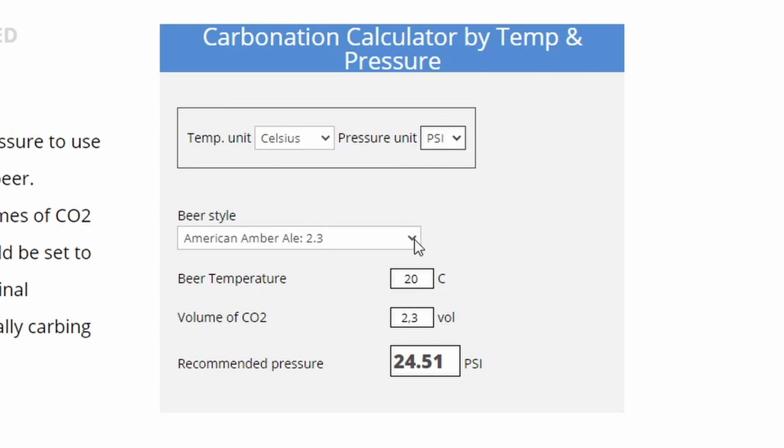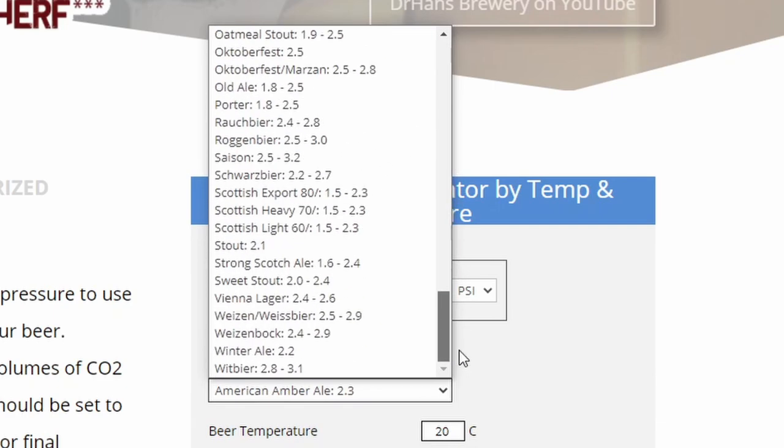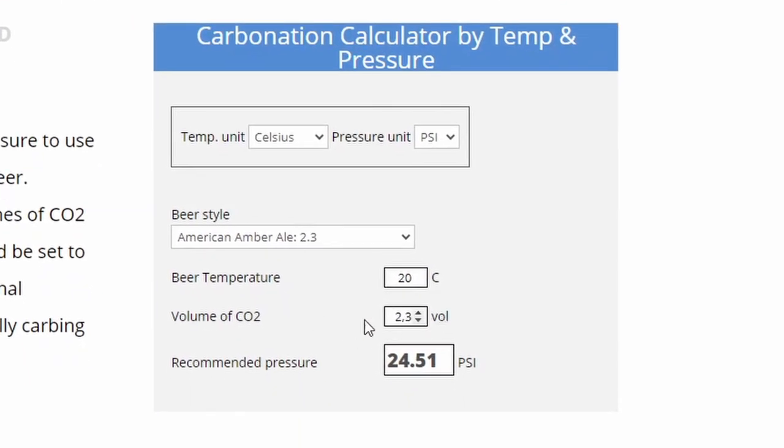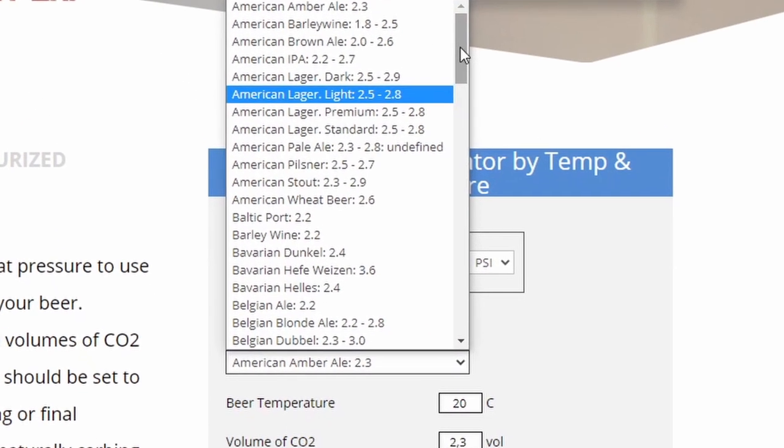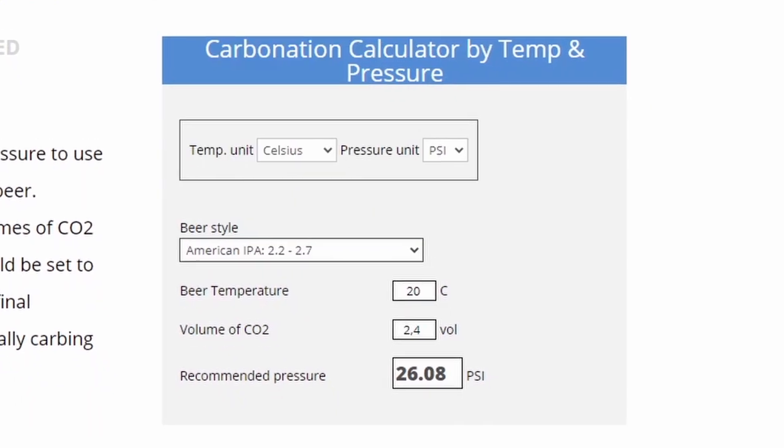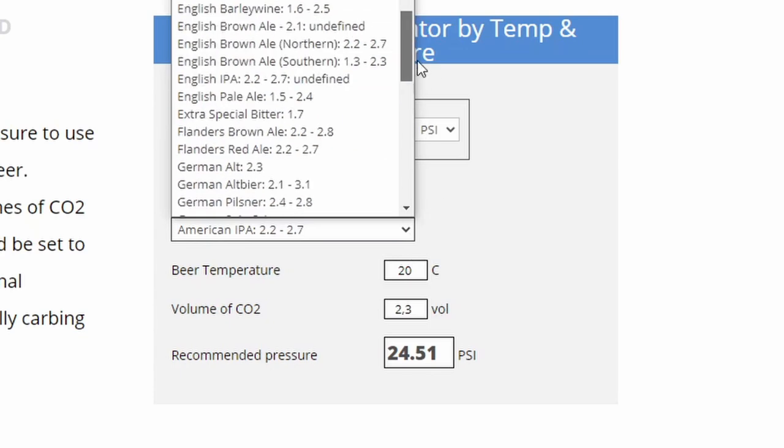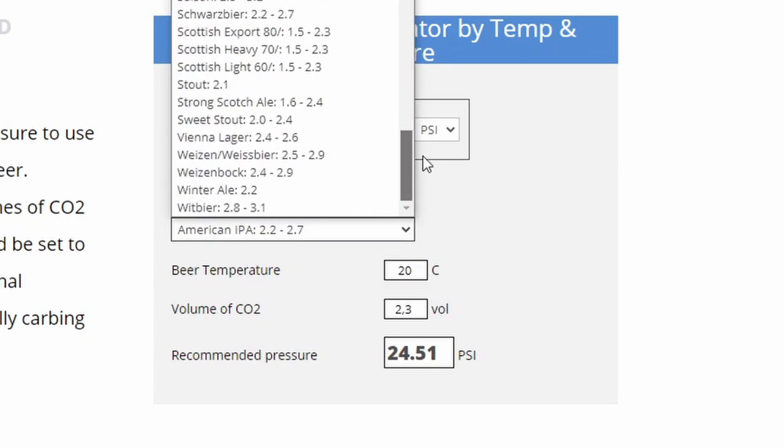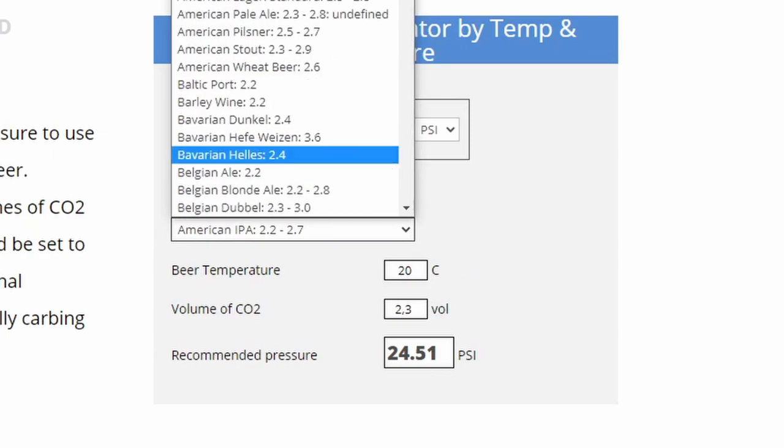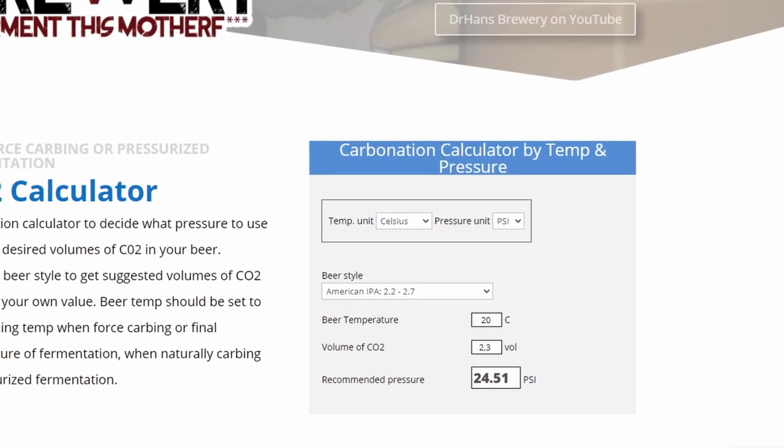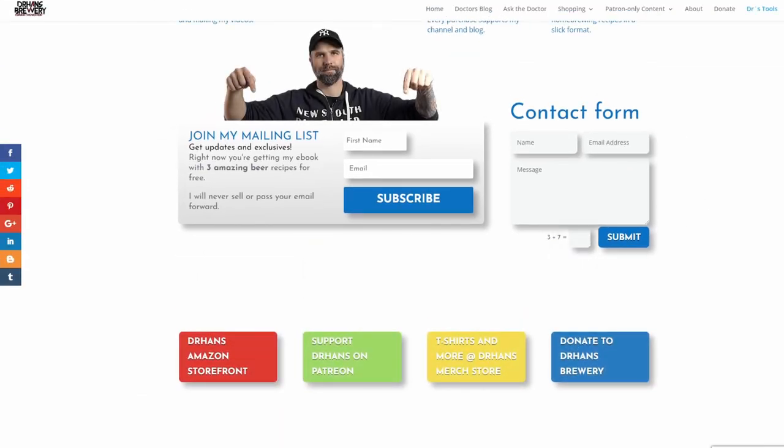Here we can either choose a beer style, we can look at the suggestions, or we can add our amount manually, or both. So if we choose for example an American IPA, you can see that it changes the suggested volumes of CO2 to 2.4, but you can go and change it manually. Also you will have a suggested span here for every beer style, and if there's a beer style you're missing here, please suggest one. You can send me an email or use the contact form down below.